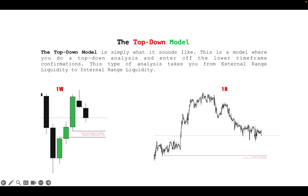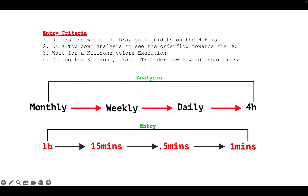Here is a chart example showing external range liquidity and internal range liquidity. The first entry criteria for a top-down analysis is to understand where the draw liquidity on the higher timeframe is. Once you understand and mark out your draw liquidity, and you have a clear draw liquidity target, you are trading towards it.